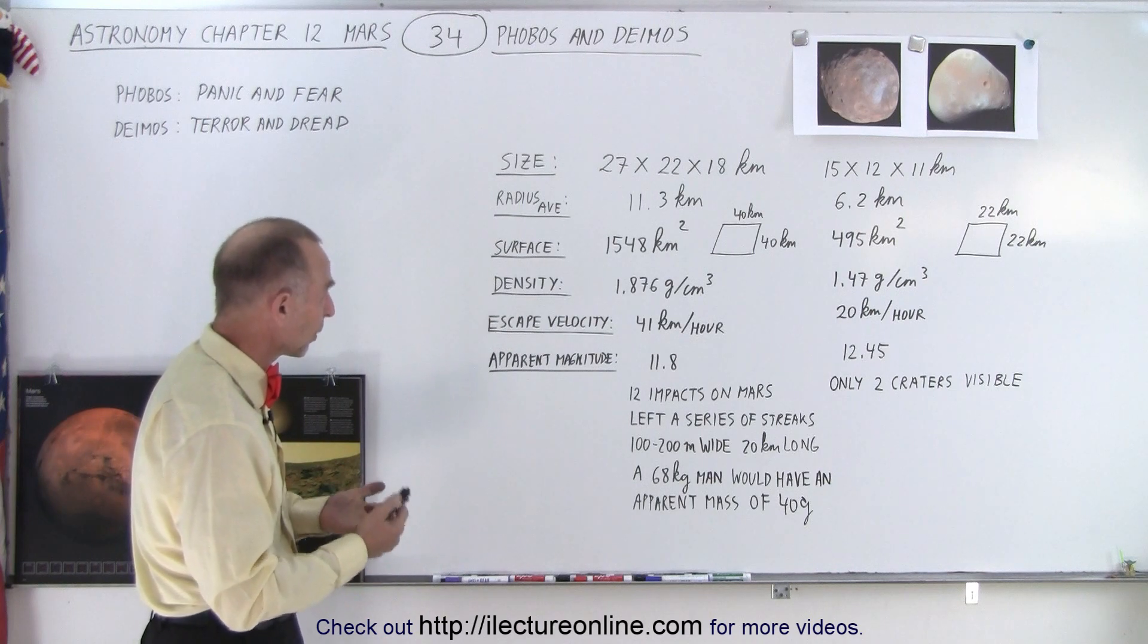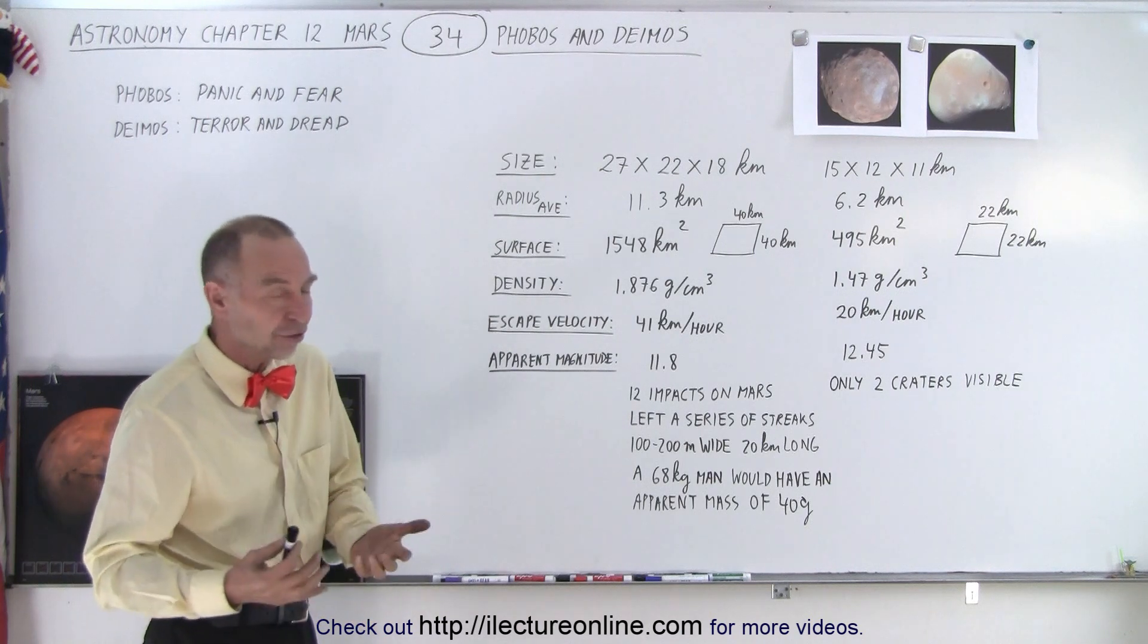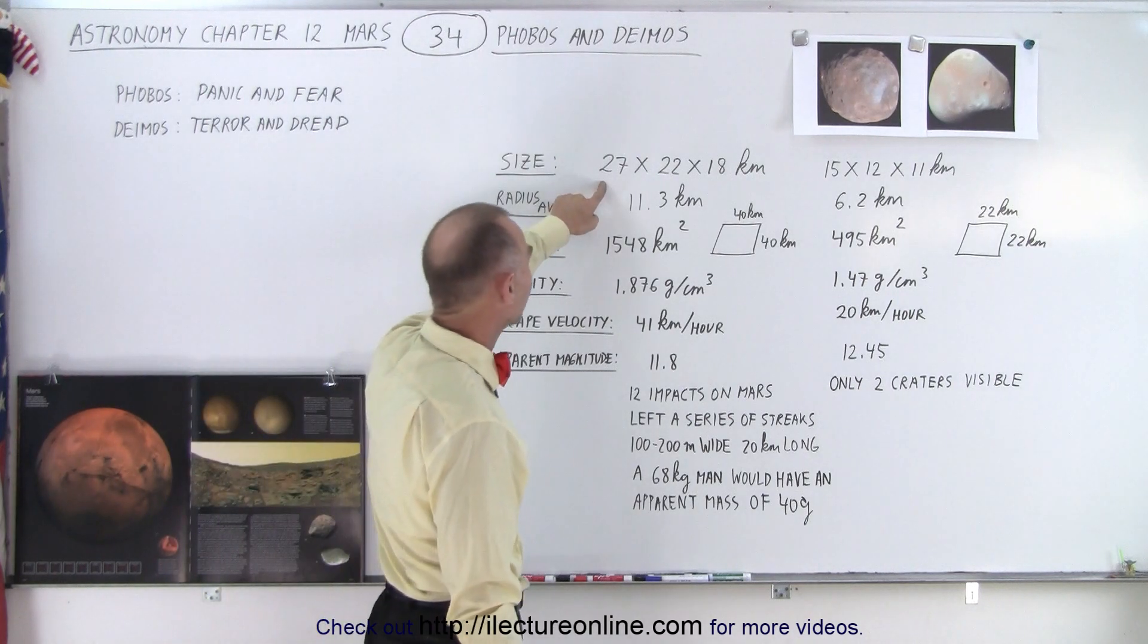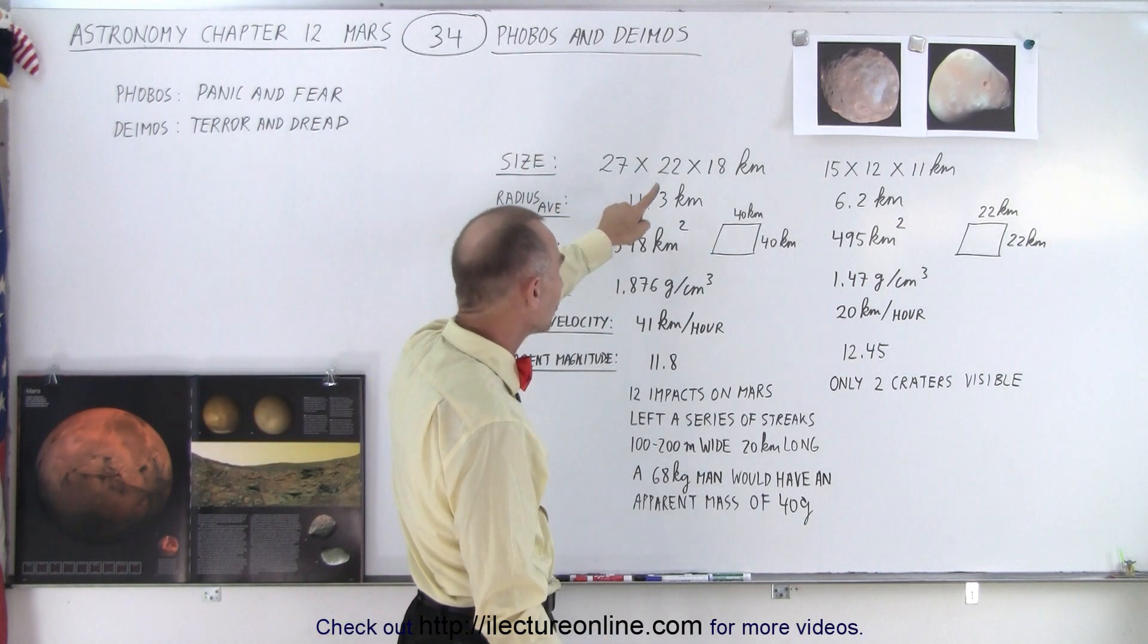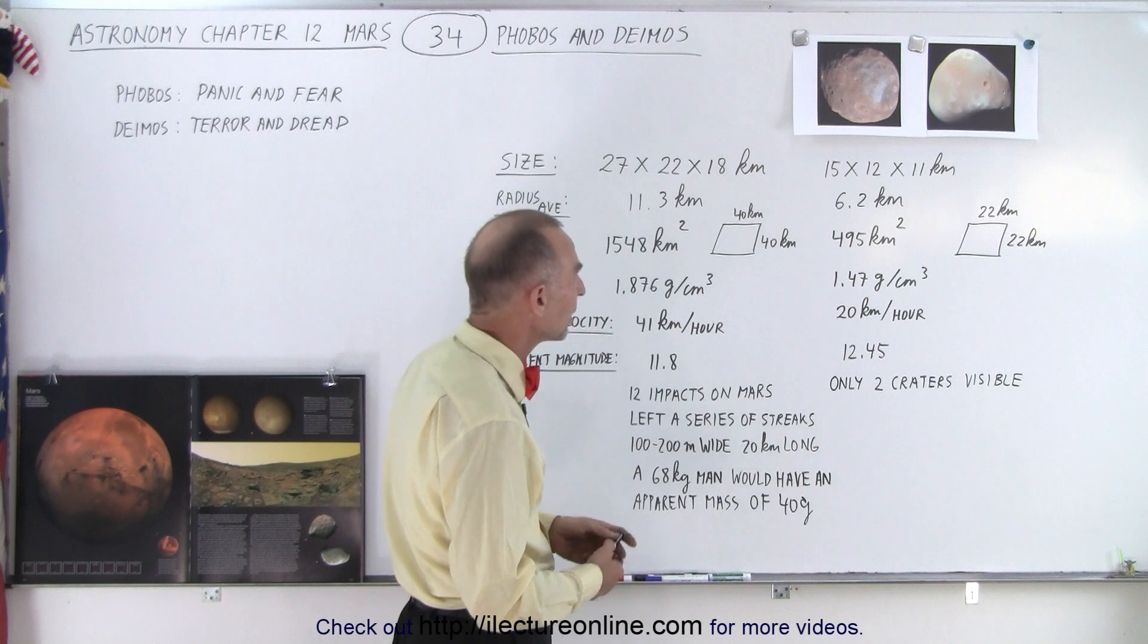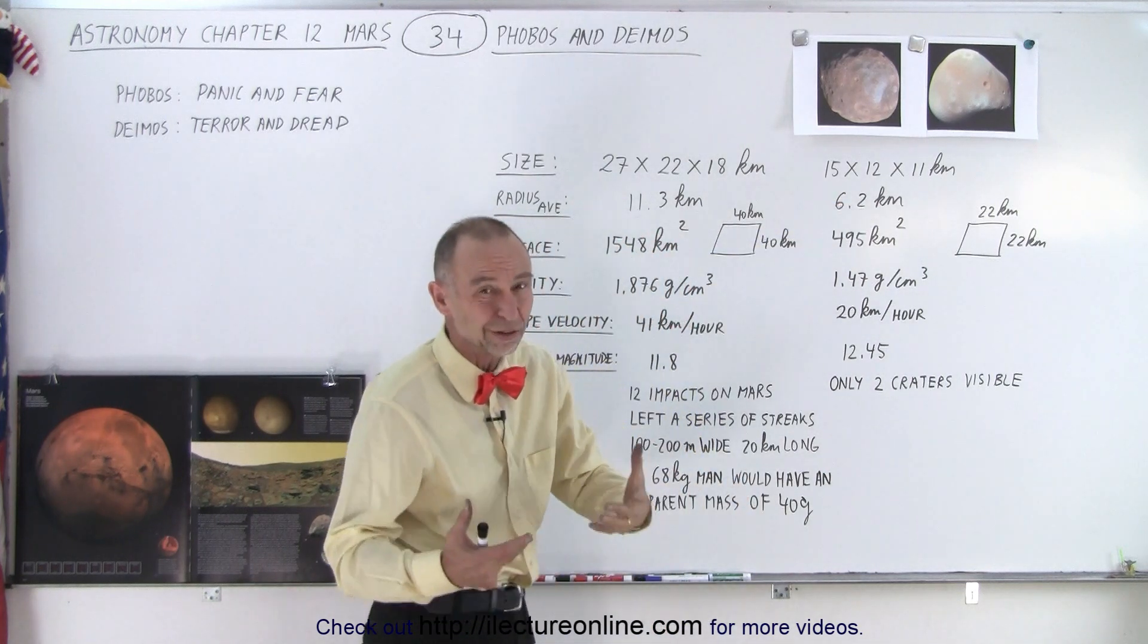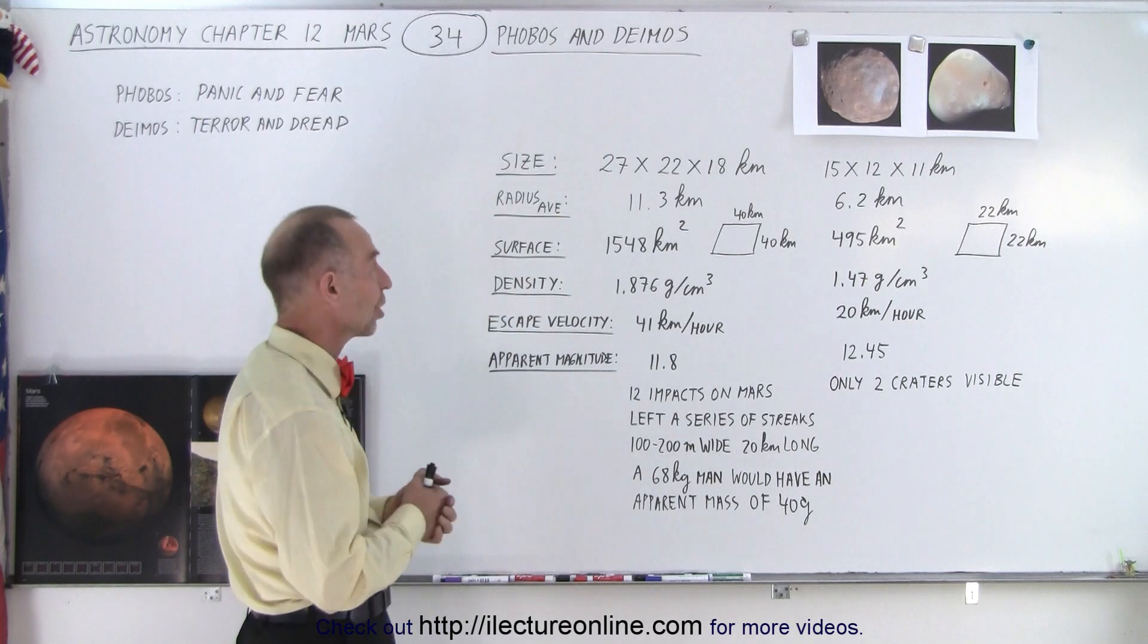Size-wise, they are relatively small even as asteroids go. We can see that for Phobos the size is about 27 by 22 by 18 kilometers, as opposed to Deimos which is 15 by 12 by 11 kilometers, so they're not really spherical—they have kind of oblong shapes.